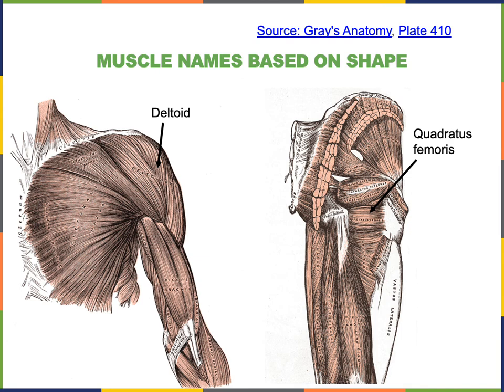One of the ways that muscles have been named is based on their shape. For example, the deltoid is named after a triangular shape because the Greek letter delta is a triangle, and the deltoid has a roughly triangular shape. Another example is quadratus femoris, which has a rectangular shape — quadratus means rectangular.